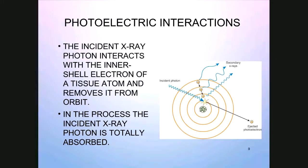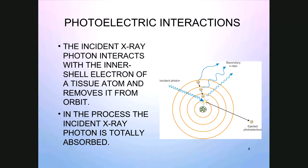Our next interaction that takes place in the diagnostic range is called photoelectric absorption. Compton scatter is responsible for unwanted shades of gray on our image, whereas photoelectric absorption gives us our areas of white or bright areas on the image receptor — like where bone is, where contrast media agents are, our iodine, our barium.